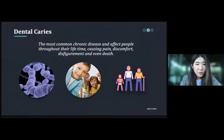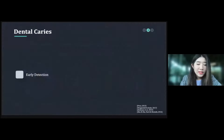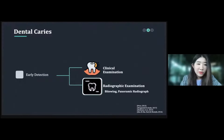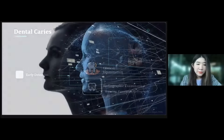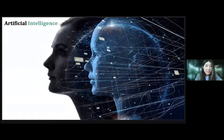Caries is the most common chronic disease which affects people throughout their lifetime in various aspects. Early detection can be provided by means of diagnosis modalities that can be divided into two main methods: clinical and radiographic examination. Other alternative methods have also been introduced to aid the clinical examination, for example fluorescence or transillumination.